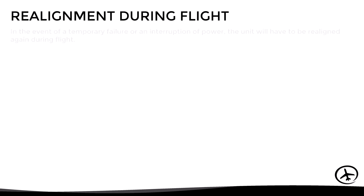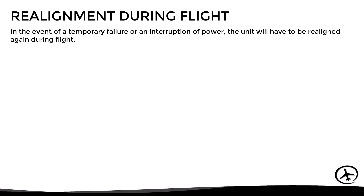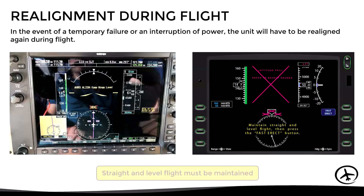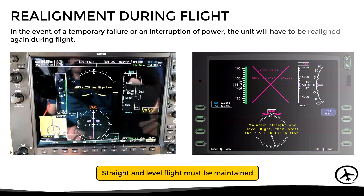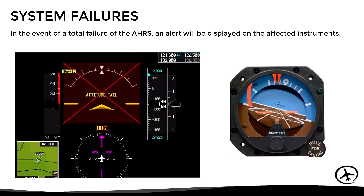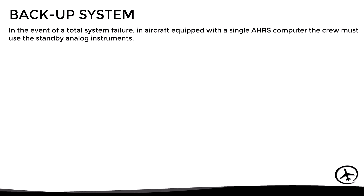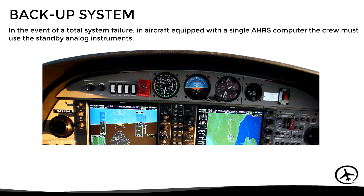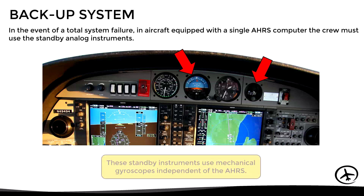However, if there is a problem with the unit during flight, a realignment may be required. In this case, the aircraft must remain in straight and level flight at constant speed and follow the manufacturer's instructions for the realignment. In the event of a total failure of the AHRS, an alert will be displayed on the affected instruments. In aircraft equipped with a single AHRS computer, the crew must use the standby analog instruments. These standby instruments use conventional mechanical gyroscopes independent of the AHRS sensors, so they are not affected by the failure of the unit.